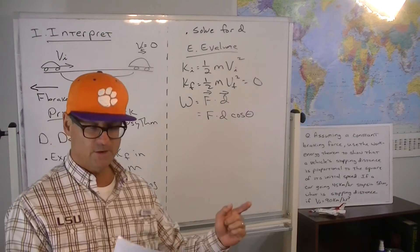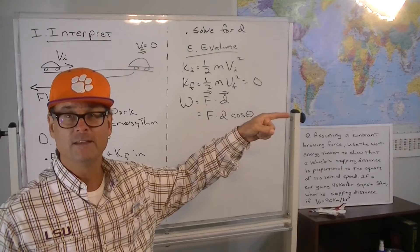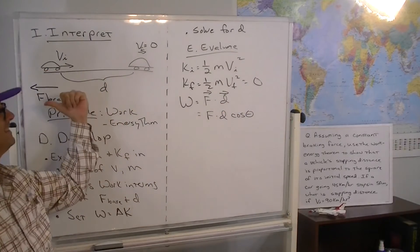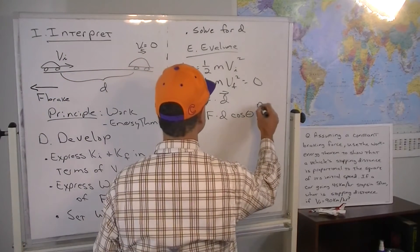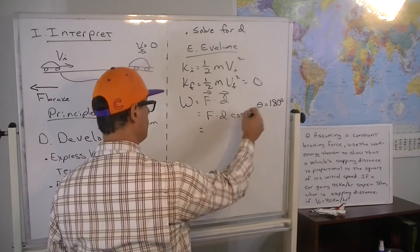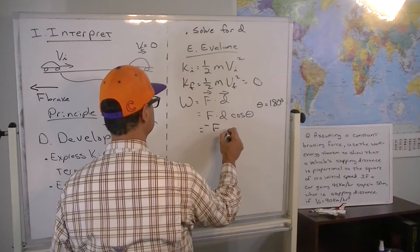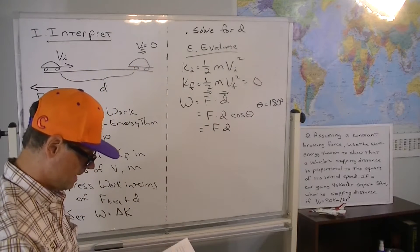And let's be a little careful here because the displacement vector is in the positive x direction the way we've drawn the picture. The braking force is in the negative x direction the way we've drawn the picture. So theta is 180 degrees, so cosine of 180 degrees is negative, so it's minus the force times the stopping distance.